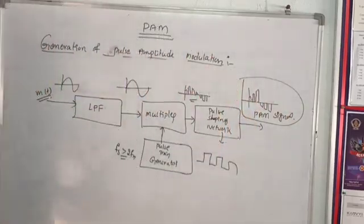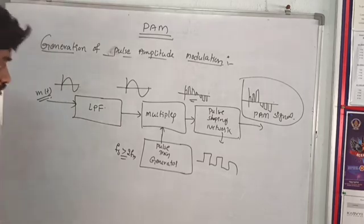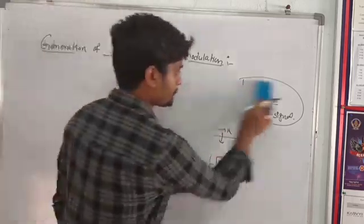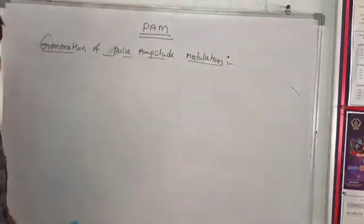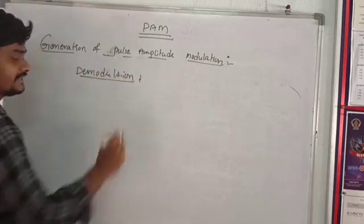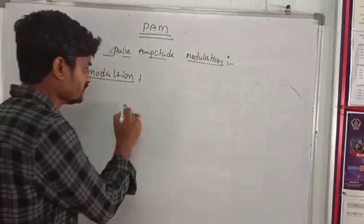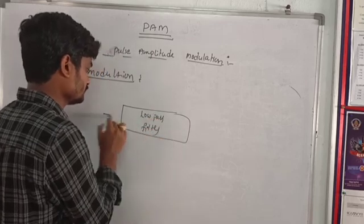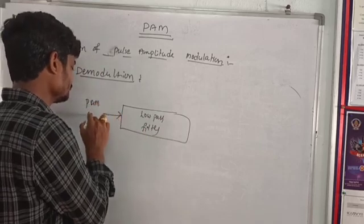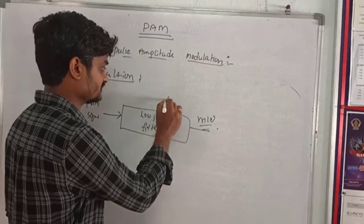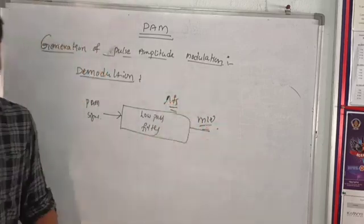This is the generation of Pulse Amplitude Modulation. And demodulation of Pulse Amplitude Modulation. In the demodulation process we can use a low pass filter. This is the input PAM signal, and we can get M of T — our message signal. This low pass filter only allows the frequency up to FS, so we can get the message signal M of T.